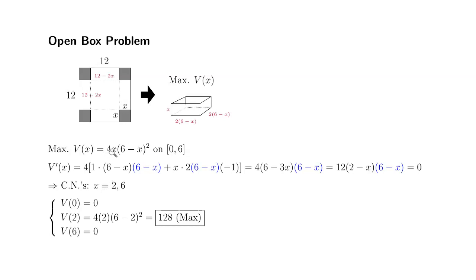The only thing that gives you a positive value is the critical number 2. So if you plug in 2 for X, it's 4 times 2, 6 minus 2 squared. It's going to be 8 times 16, which gives you 128. So obviously, this is the only positive value, this is going to be the maximum volume.